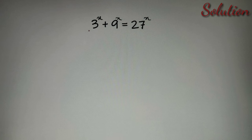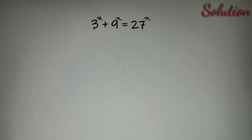I hope that you've tried the question and found the solution. If you didn't, then let's check the solution together. According to our given equation, we have to find the value of x in 3 raised to the power x plus 9 raised to the power x is equal to 27 raised to the power x.